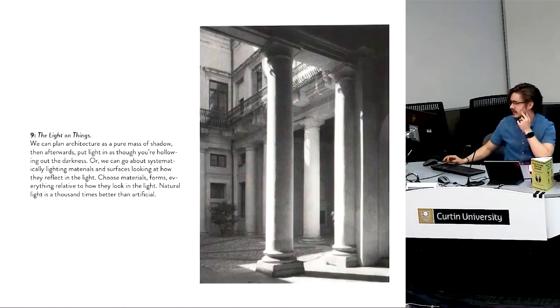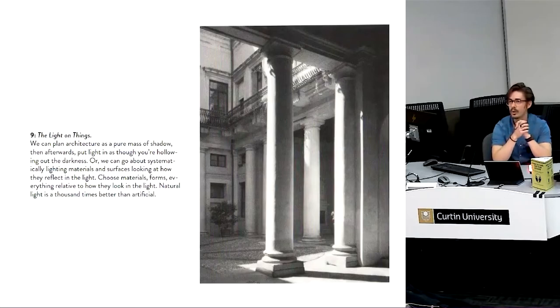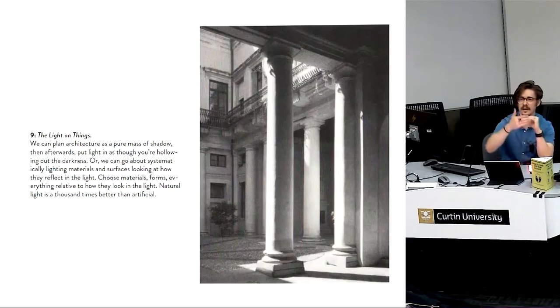Last one, the light on things. We can plan architecture as a pure mass of shadow and then afterwards put light in as though you're hollowing out the darkness. Very poetic. But all it's saying is that we need to think about light as a way of carving into the space. Or we can go about systematically lighting materials and surfaces, looking at how they reflect in the light. So you've got two options there. You can think about how the light can start to carve into the space. Or if your materials are really critical to you, the objects are really critical to you, the thresholds, you might just want to light those key moments. You might want to create moments of intense shadow followed by moments of intense light. And so you get this sequence of light and shadow that we get to walk through and pass through.